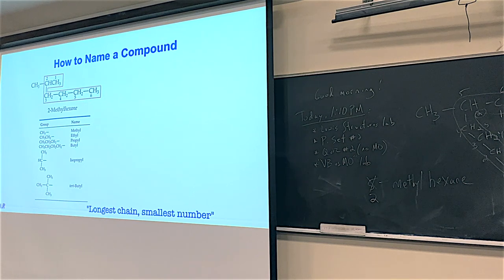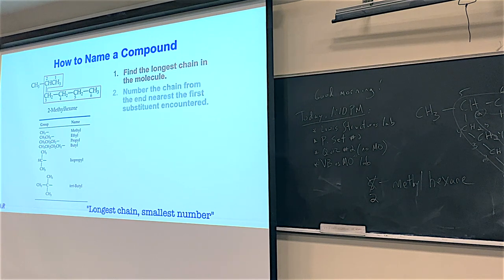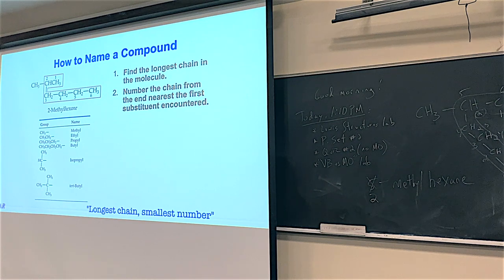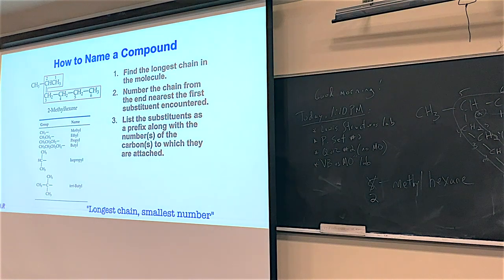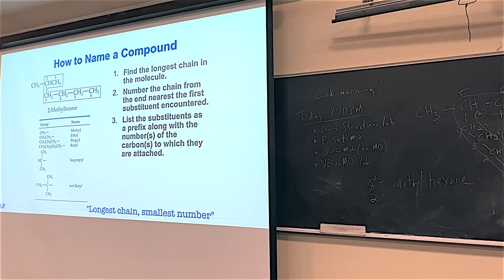Find the longest chain first — that's the longest chain part. Then number the chain from both sides. I was really bad at this, so I literally still number both sides to double-check. Figure out your smallest number and put that number in front. If there's more than one methyl, you'll use Greek prefixes: dimethyl, trimethyl, and so on.